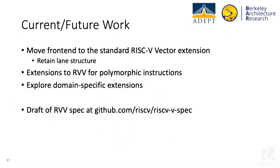In terms of current and future work, we are moving towards the standard RISC-V vector extension, which involves replacing the front end while retaining the lane datapath and other control signals. We also intend to investigate polymorphic instructions for the RISC-V vector extension and explore other domain-specific extensions. A draft of the latest RISC-V vector spec is available on GitHub.